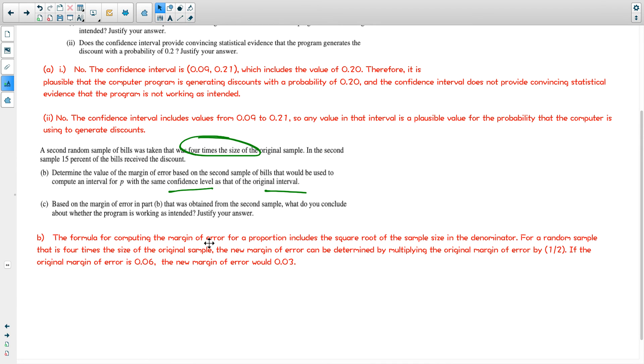The formula for computing margin of error for proportion includes a square root in the denominator. For a random sample that is four times the size of the original sample, the new margin of error can be determined by multiplying the original margin of error by half. If the original margin of error is 0.06, the new margin of error would be 0.03. I think that answers part B pretty well.